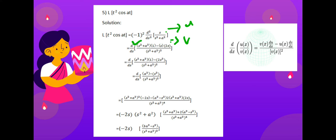For the second differentiation, the numerator u is (a² - s²) and denominator v is (s² + a²)², so v² is (s² + a²)⁴. Differentiating: v·du gives (s² + a²)² times (-2s), and u·dv gives (a² - s²) times 2(s² + a²)·2s. Taking the common factor (s² + a²), we simplify the expression.